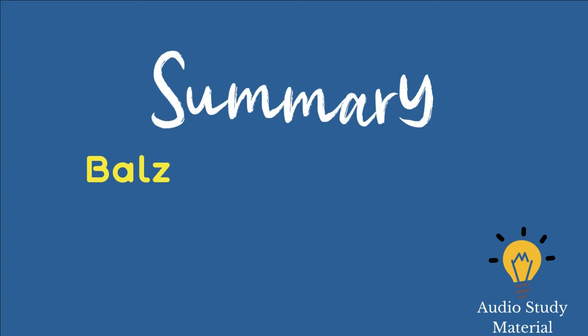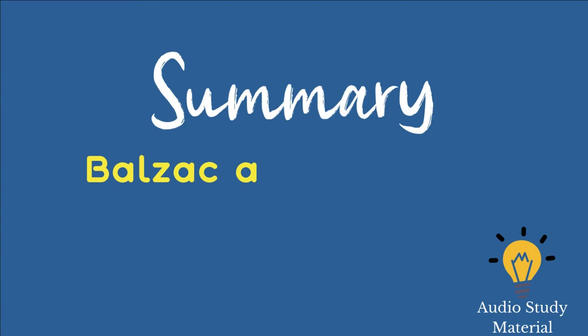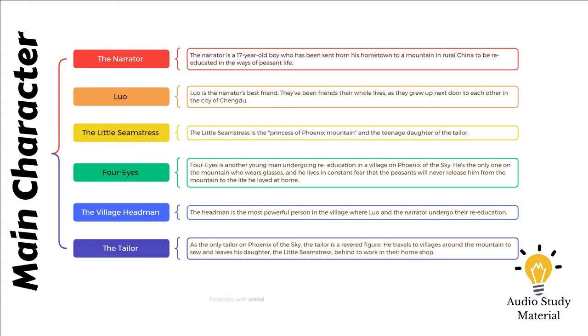The village headman wishes to fire the narrator's violin, but Luo informs him that the narrator is a superb violinist who will perform a sonata titled Mozart is thinking of Chairman Mao. The headman gives the violin to the narrator.